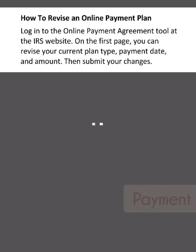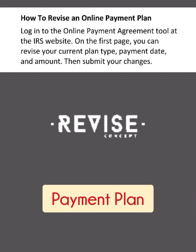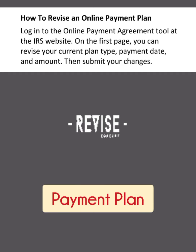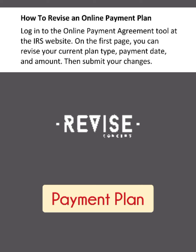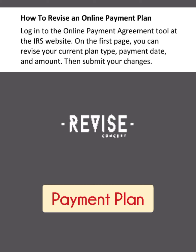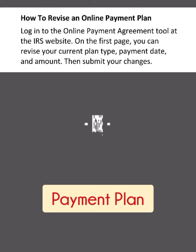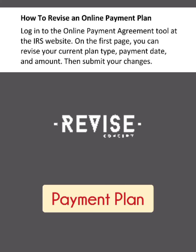How to revise an online payment plan: log into the online payment agreement tool at the IRS website. On the first page, you can revise your current plan type, payment date, and amount. Then submit your changes.